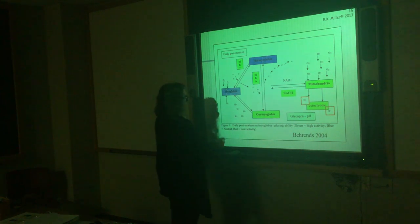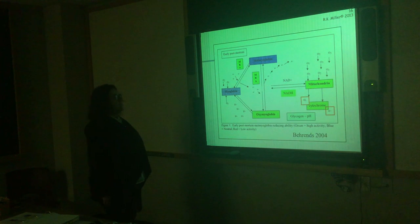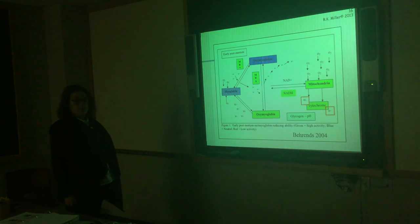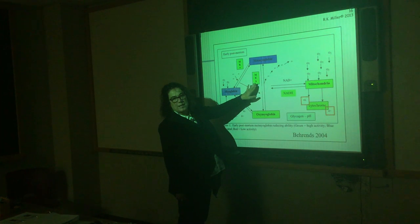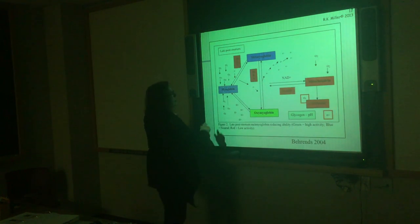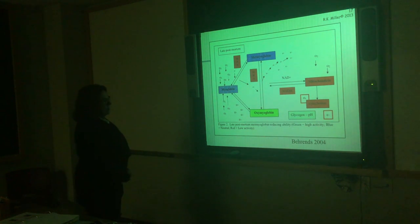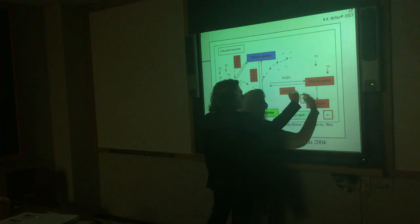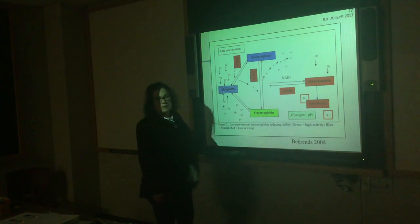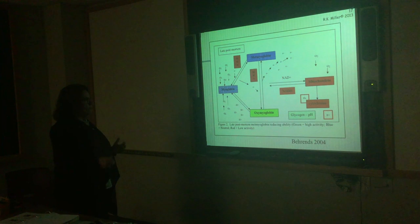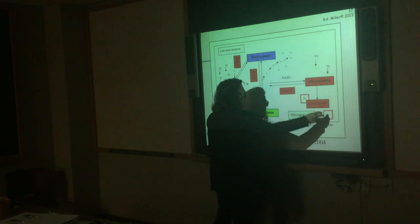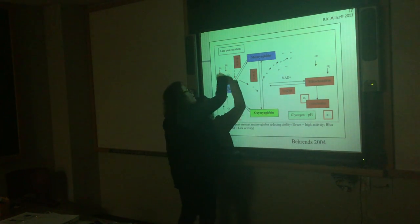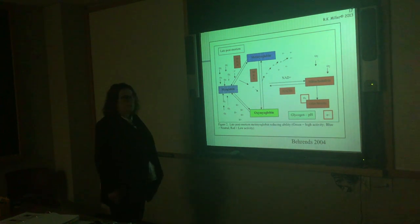Metmyoglobin reducing activity is still somewhat functional in meat early postmortem, but this enzyme is going to wear out — just like calpains and calpastatins wear out. Late postmortem, you have less electrons being produced by the mitochondria and you've also worn out the MRA. So when we look at shelf life of meat, part of what's going on is the interrelationship between the mitochondria, production of electrons, how much oxygen is present, and how well metmyoglobin reducing activity can perform.